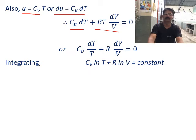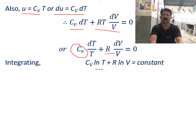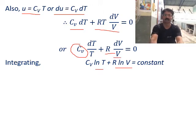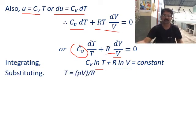Integrating the above expression, CV is a constant, so integration of DT by T is ln T. The second term, R, is constant, and integration of DV by V is ln V. So we get CV ln T plus R ln V equals constant.